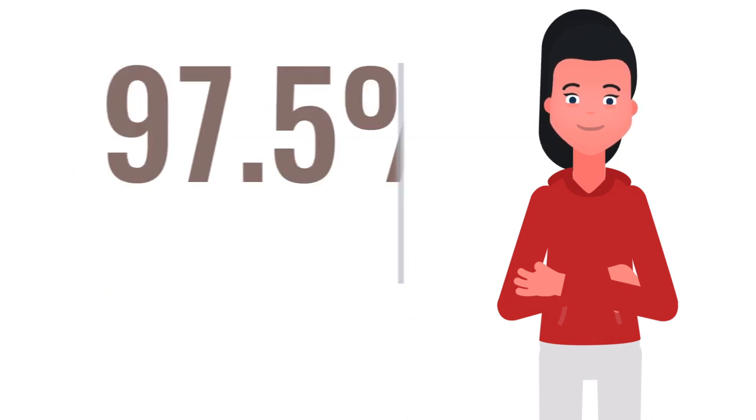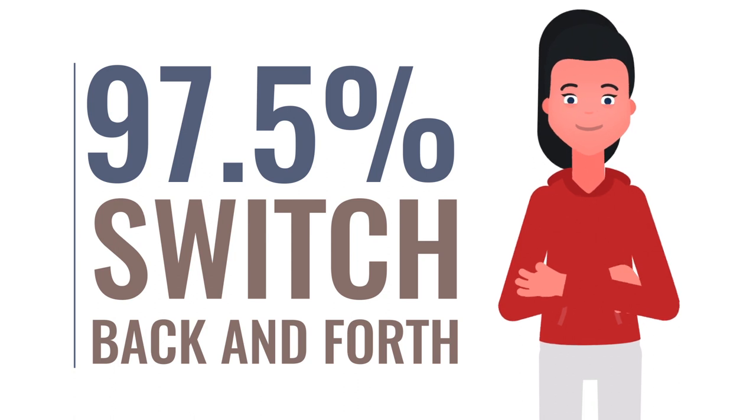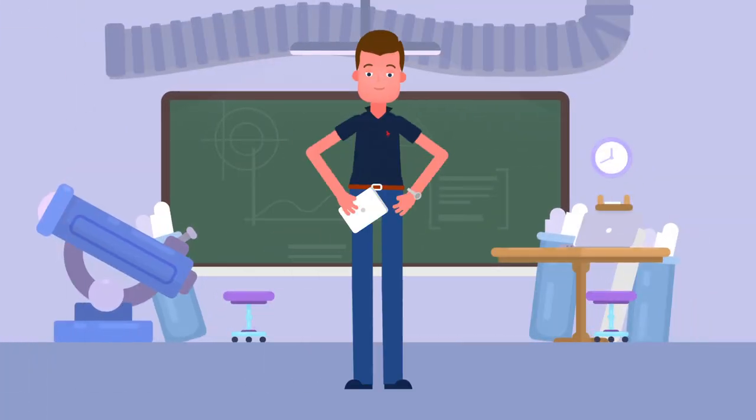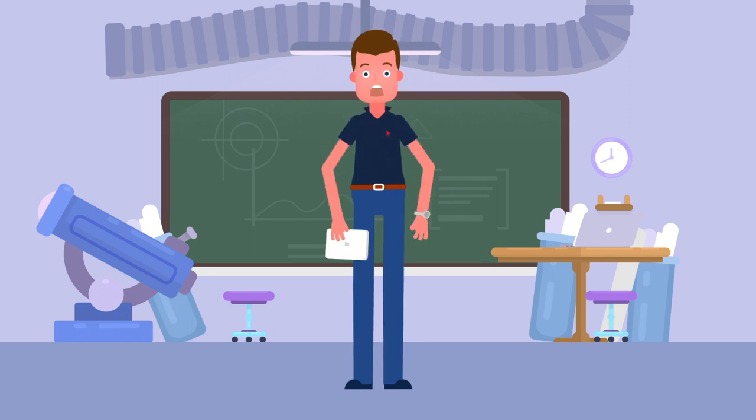For the other 97.5% of us, our minds switch back and forth between activities, giving the illusion of multitasking. Being distracted in class may decrease your ability to process information by 40 to 50%. That could mean you could see a full grade drop or even more.